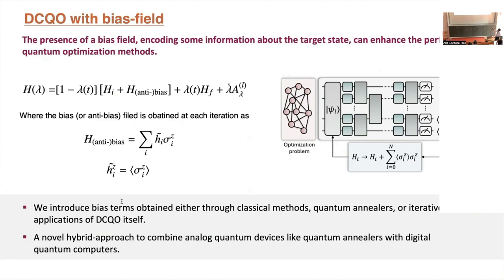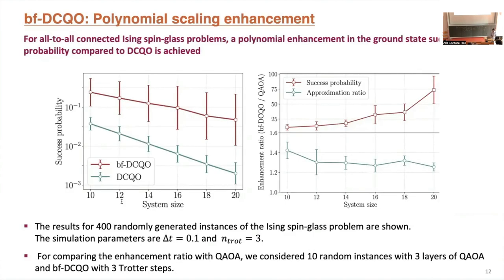With this bias field, we modify the initial Hamiltonian during each iteration by feeding back the expectation value in the Pauli-z basis. We observed another polynomial scaling enhancement with bias field DCQO compared to the previously discussed DCQO — the exponential factor is even smaller. So again there is a polynomial scaling enhancement, and this is empirical evidence from a purely digital, purely quantum approach, not using any classical optimization or hybrid variational algorithms.